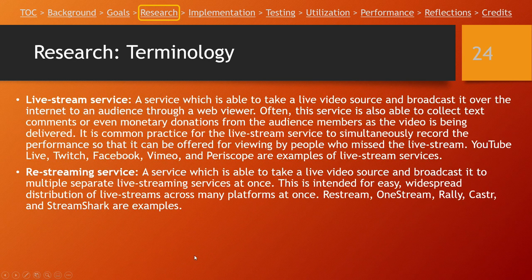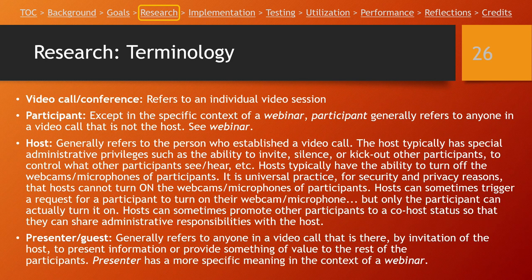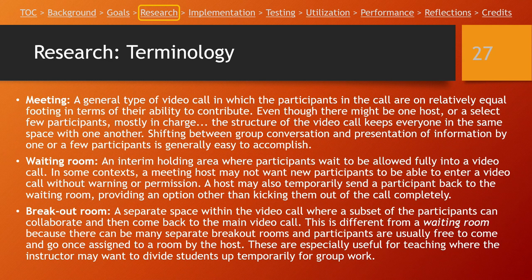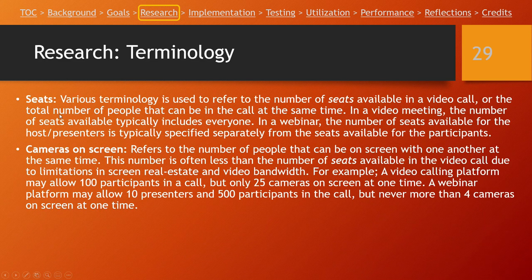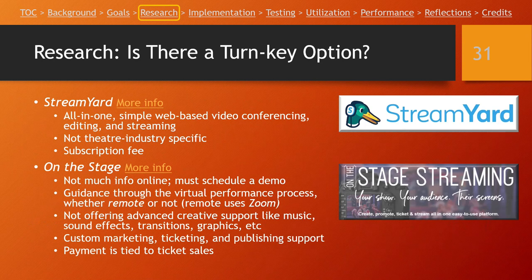The research also covered video conferencing terminology: hosts and guests, waiting rooms, breakout rooms, meetings, webinars, and more. An important distinction is between seats and cameras on screen — some platforms say you can have a hundred people in a call but only 25 cameras on screen at one time. We looked at broadcast video software, turnkey options we could hire or use, and the rapidly changing landscape of online marketing, ticketing platforms offering live streaming support, and new businesses and freelancers offering services to fill the niche of supporting remote theater performance.